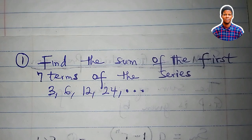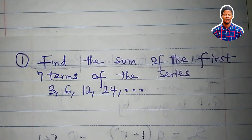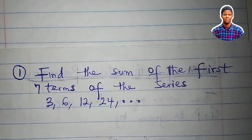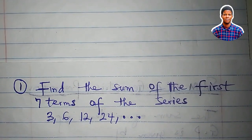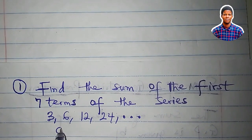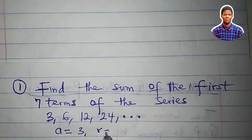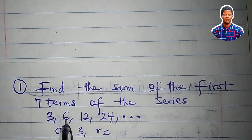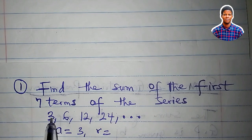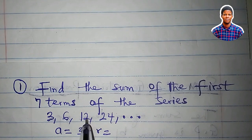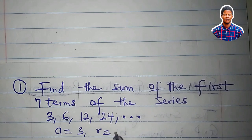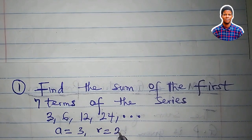I want to find the sum of the first seven terms of this series: 3, 6, 12, 24, ... The first term a = 3. The common ratio: 6/3 = 2, 12/6 = 2, 24/12 = 2. So r = 2. The question asks for the sum of the first seven terms, so n = 7.